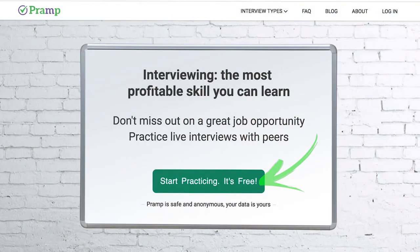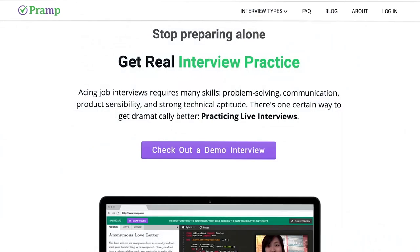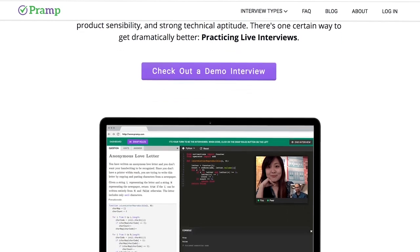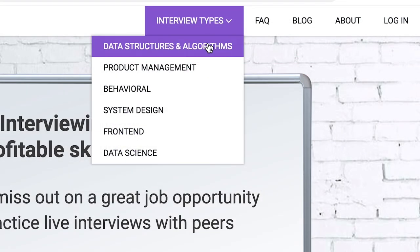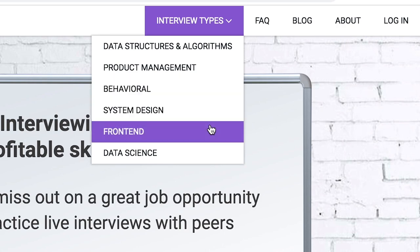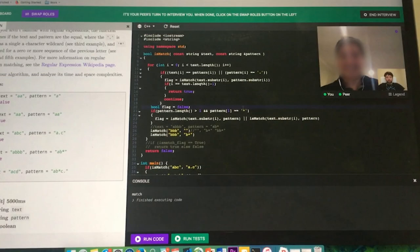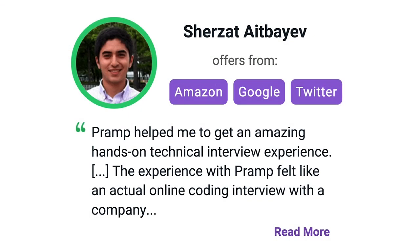Now, before we get started, do check out our sponsor. Pramp is a free mock interview platform where you can develop your technical interviewing skills. Practice coding with live execution of all major programming languages to solve real interview questions. Interview types include data structures and algorithms, product management, behavioral interviews, system design, front-end, and data science. I've personally used this service to successfully crash course for a software engineering interview. Lots of people are having success getting positions at companies like Amazon, Google, Twitter, and more. Check it out. I'll leave a link for you guys in the description.